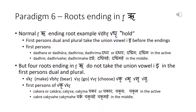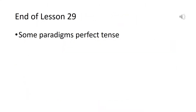Roots ending in 'ṛ' do not take the union vowel 'i' in the first person dual and plural. This is the end of lesson 29. In this lesson, we looked at some paradigms of the perfect tense. We will continue with the perfect tense in the next lesson also.